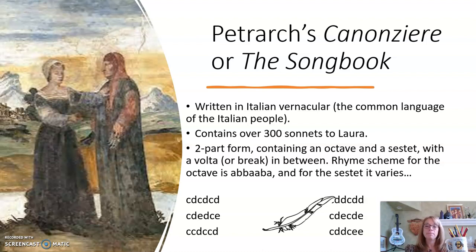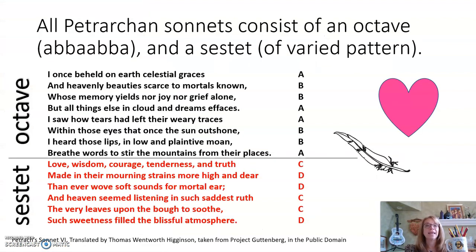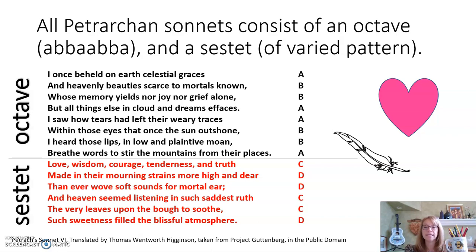Interestingly, before I leave this slide, think about the fact that Petrarch wrote over 300 sonnets to the same woman — she was not his wife, she was already married to someone else. All of Petrarch's sonnets consist of the octave, A-B-B-A, A-B-B-A, and a sestet, which is a varied pattern. This is Petrarch's Sonnet 6 in English translation, showing the rhyme scheme A-B-B-A, A-B-B-A, C-D-D, C-D-D.